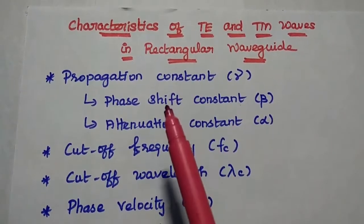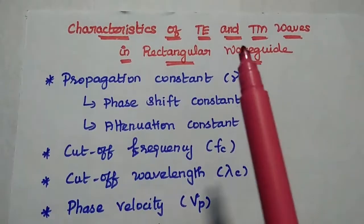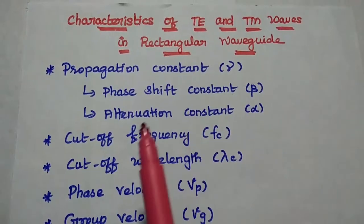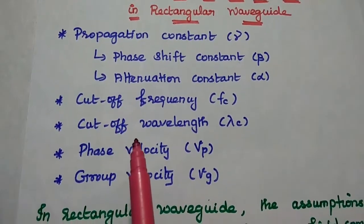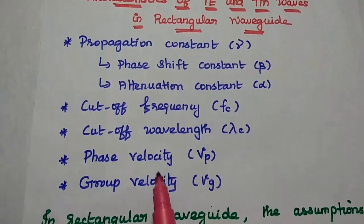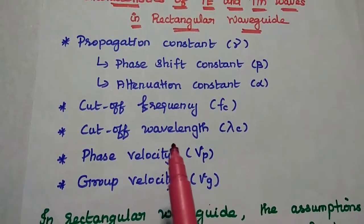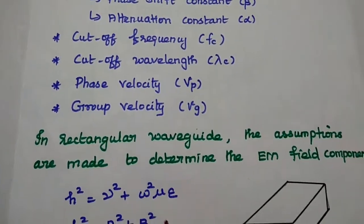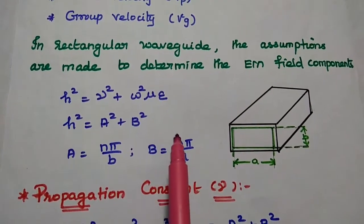Dear students, now we are going to discuss characteristics of TE and TEM waves in rectangular waveguide: propagation constant, phase shift constant, attenuation constant, cutoff frequency, cutoff wavelength, phase velocity, group velocity, and wave impedance. These are all the important characteristics of electromagnetic waves in waveguides. Before going to derive the characteristics, let's discuss the important assumptions in this rectangular waveguide.